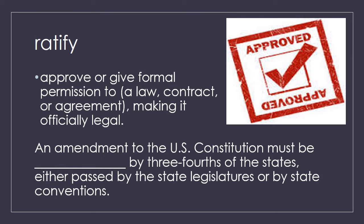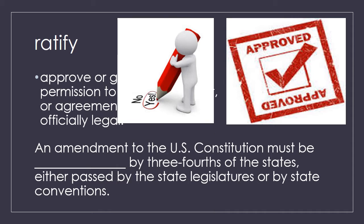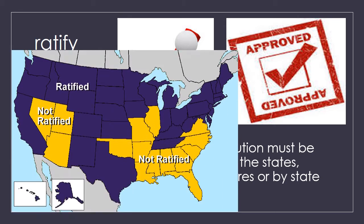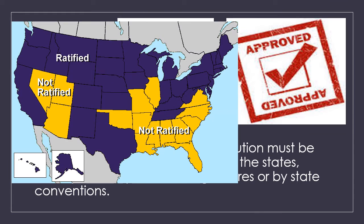An amendment to the U.S. Constitution must be ratified by three-fourths of the states, either passed by the state legislators or by state conventions. So making an amendment to the Constitution has to have an approval by three-fourths of the states, and you can see that that's a majority of the 50 states.